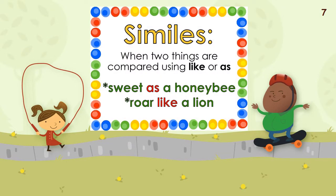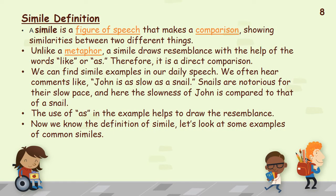Similes are when two things are compared using 'like' or 'as' — for example, 'sweet as a honeybee' or 'roar like a lion.' The words 'as' and 'like' are obvious here. A simile is a figure of speech that makes a comparison showing similarities between two different things. Unlike a metaphor, a simile draws resemblance with the help of the words 'like' or 'as,' making it a direct comparison. For example, 'John is as slow as a snail' — the slowness of John is compared to that of a snail, with 'as' drawing the resemblance.